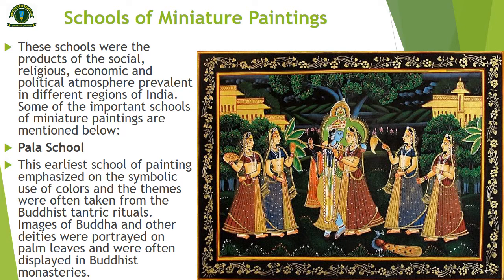The schools we are studying include Pala Paintings and Jain Paintings. In these styles you will see Mughal style and also Persian style. The earliest Indian miniature paintings are related to the Pala School, dating back to the 8th century. This school of painting emphasized the symbolic use of colors, and the themes were often taken from Buddhist Tantric rituals.